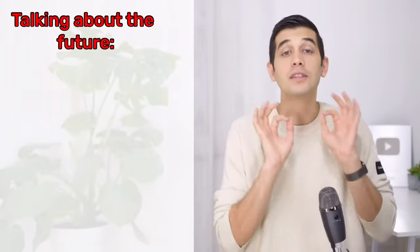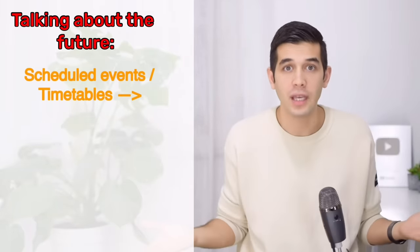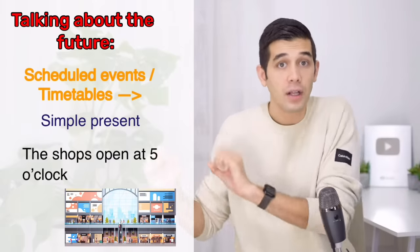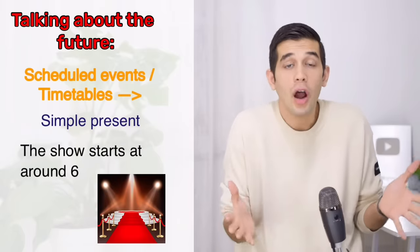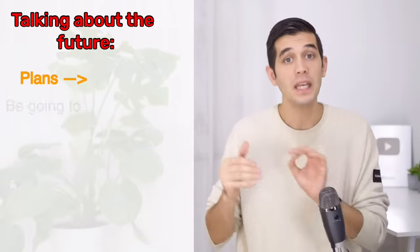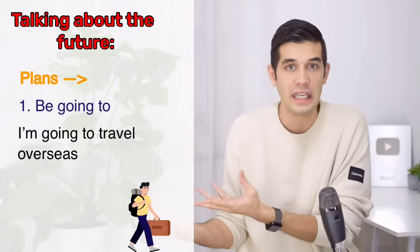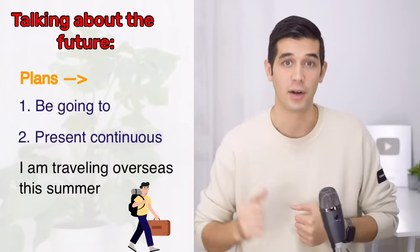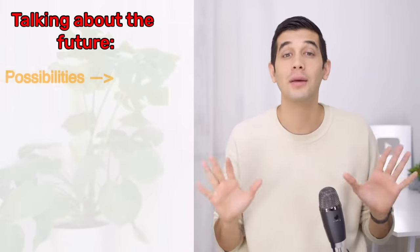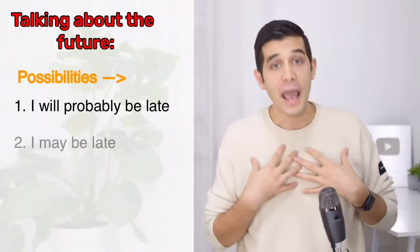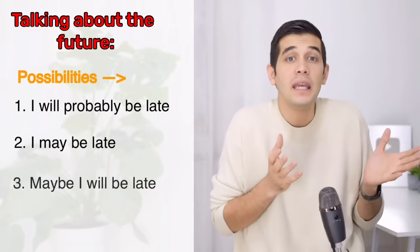It is time to sum up the three lessons we have learned. To talk about scheduled events in the future or future timetable, we use simple present: 'the shops open at 5 o'clock,' 'the show starts at around 6.' To talk about future plans, we either use be going to — 'I'm going to travel overseas' — or present continuous — 'I am traveling overseas this summer.' And we have learned three structures to talk about future possibility: 'I will probably be late,' 'I may be late,' 'maybe I will be late.'